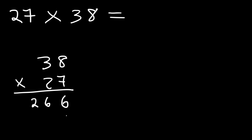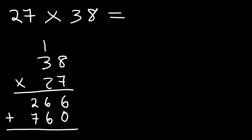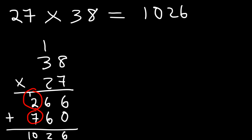Now add a 0 to go to the next level. Then multiply 2 times 8, which is 16 — write the 6, carry over the 1. Then 2 times 3 is 6 plus 1, so that becomes 7. Now we add: 0 plus 6 is 6, then 6 plus 6 is 12, write 2 carry the 1, then 1 plus 2 is 3, 3 plus 7 is 10. The answer is 1026.